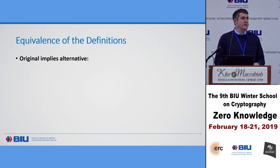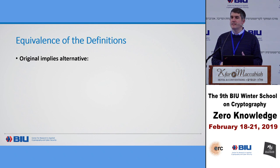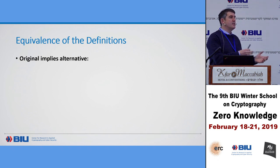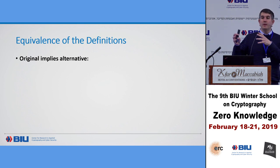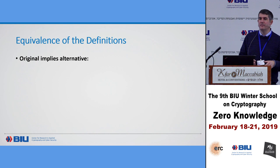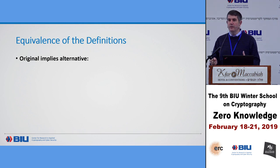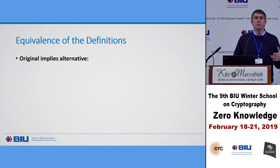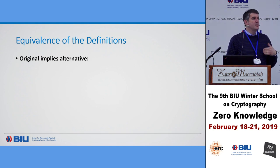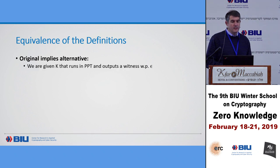These two definitions are actually equivalent. Why does equivalence matter? In many cases, one definition is easier for proving that a protocol is a zero knowledge proof of knowledge, while the other is easier to use when employing the protocol as a sub-protocol elsewhere. It's like encryption: we have semantic security as an appealing definition, but it's harder to prove schemes meet it. The first definition is easier for proving protocols are ZK proofs of knowledge; the second is more useful in applications.